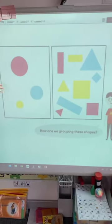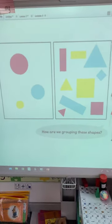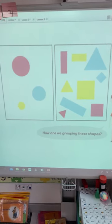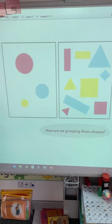How are we grouping these? Have a look at it. How are we grouping them? Are we grouping them by shape? Or are we grouping them by colour? See if you can work it out.